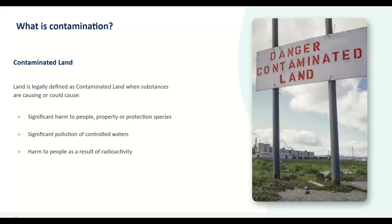In terms of what contamination is, the legal definition applies when assessing sites under Part 2A of the Environmental Protection Act 1990, which governs contaminated land. Land can still be contaminated but not necessarily meet this legal definition. Contamination can arise from a wide range of historical and current activities like gas works, factories, garages, petrol stations, and landfill sites — all of which can give rise to contaminants including heavy metals, arsenic, lead, oil, tar, chemicals, and radioactive substances in very extreme cases.